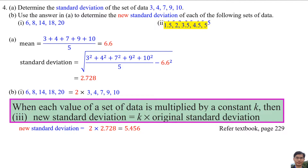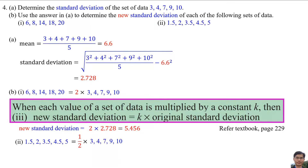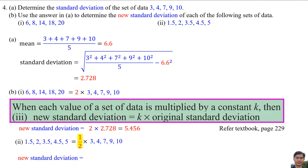Number 2: we find that the data is half times the original data. So the new standard deviation equals k times the original standard deviation, where k is one half. So the new standard deviation equals 0.5 times 2.728, which equals 1.364.